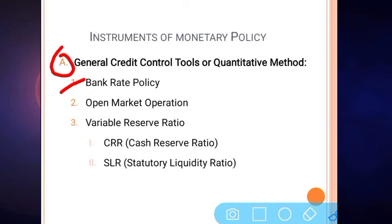In case of deflation — the time period when prices are decreasing due to scarcity or shortage of money in the market — the government does the exact reverse of what it does during inflation. In inflation, RBI increases the bank rate, while during deflation, RBI decreases the bank rate. As RBI decreases the bank rate, commercial banks also decrease their lending rates.